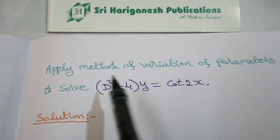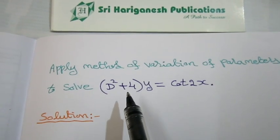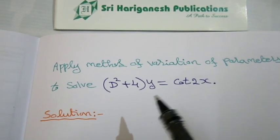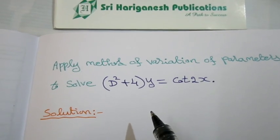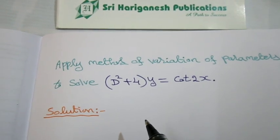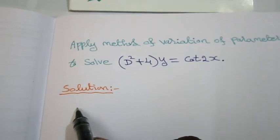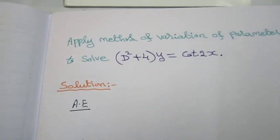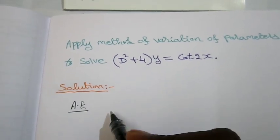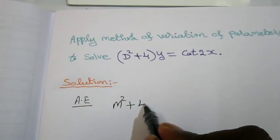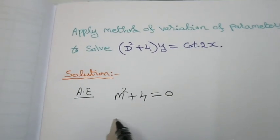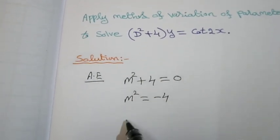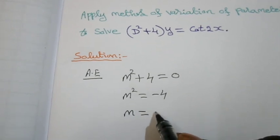By using the method of variation of parameters, the complementary function is found as usual. To find the complementary function, first write the auxiliary equation. Put m in place of D, so m² + 4 = 0, giving m² = -4, so m is equal to plus or minus...